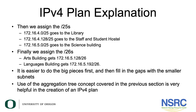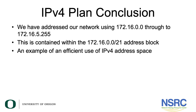Remember it's easier to do the big pieces first and then fill in the gaps with the smaller subnets. Use of the aggregation tree concept that we covered previously is very helpful in the creation of an IPv4 address plan. In conclusion, we have addressed our network using 172.16.0.0 through to 172.16.5.255, which is contained within the 172.16.0.0/21 address block. This is an example of an efficient use of an IPv4 address space. Remember we talked about aggregation — this is very useful when you're aggregating your network.